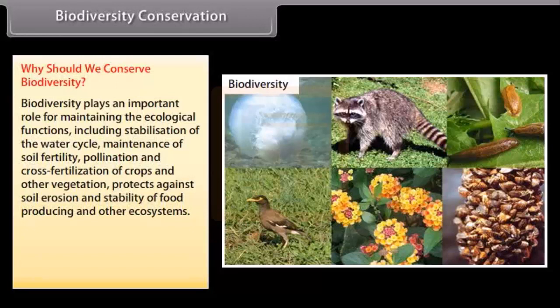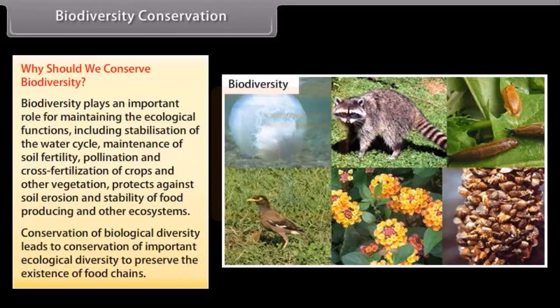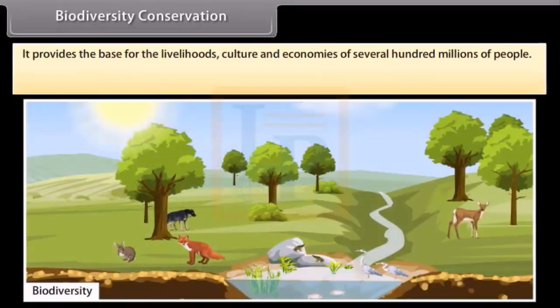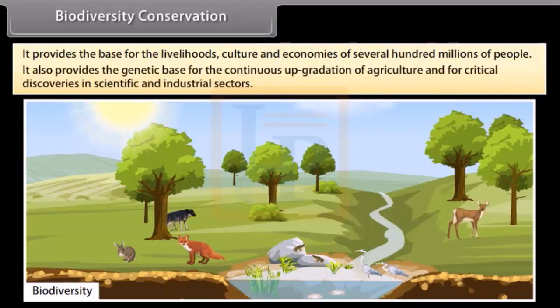Biodiversity Conservation. Conservation of biological diversity includes stabilization of water cycle, maintenance of soil fertility, pollination and cross-fertilization of crops and other vegetation, protects against soil erosion and stability of food producing and other ecosystems. Conservation of biological diversity leads to conservation of important ecological diversity to preserve the existence of food chains. It provides the base for the livelihoods, culture and economies of several hundred millions of people. It also provides the genetic base for the continuous upgradation of agriculture and for critical discoveries in scientific and industrial sectors.